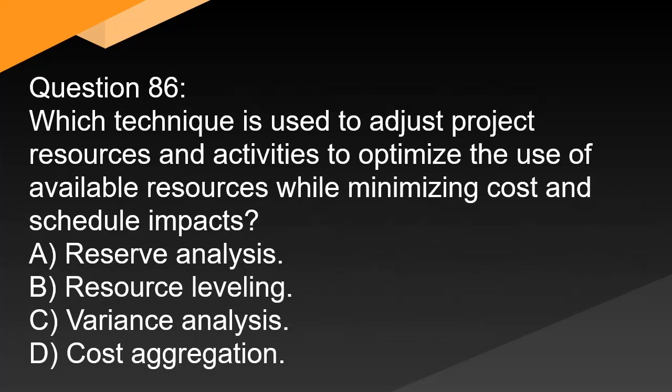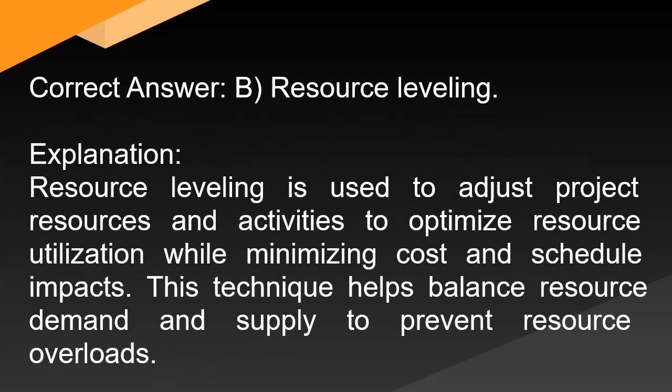Question 86: Which technique is used to adjust project resources and activities to optimize the use of available resources while minimizing cost and schedule impacts? A. Reserve analysis. B. Resource leveling. C. Variance analysis. D. Cost aggregation. Correct answer: B. Resource leveling. Explanation: Resource leveling is used to adjust project resources and activities to optimize resource utilization while minimizing cost and schedule impacts. This technique helps balance resource demand and supply to prevent resource overloads.